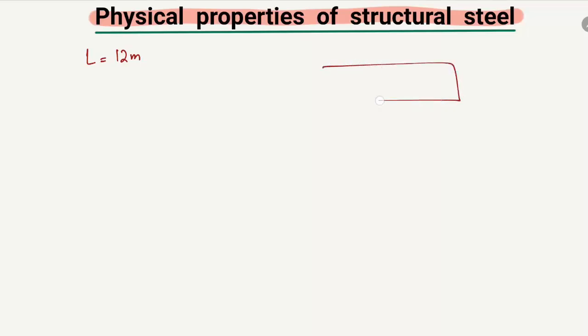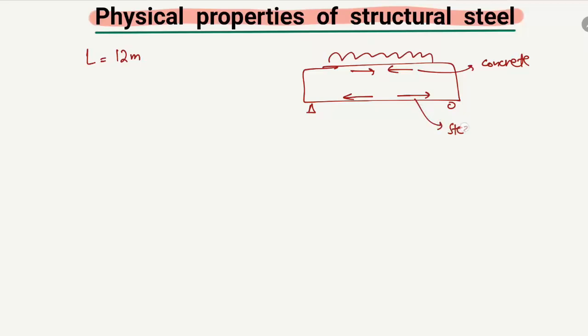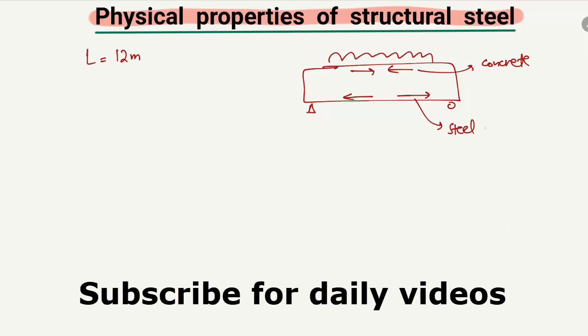If I consider this is a beam, when the load acts on this beam with supports provided, we have tension at the bottom of the beam and compression at the top. Concrete is strong in compression, so concrete is responsible to take the compression, while at the bottom we have steel reinforcement, which is responsible to take the tension. So structural steel is provided in order to take the tensile stresses in a beam.